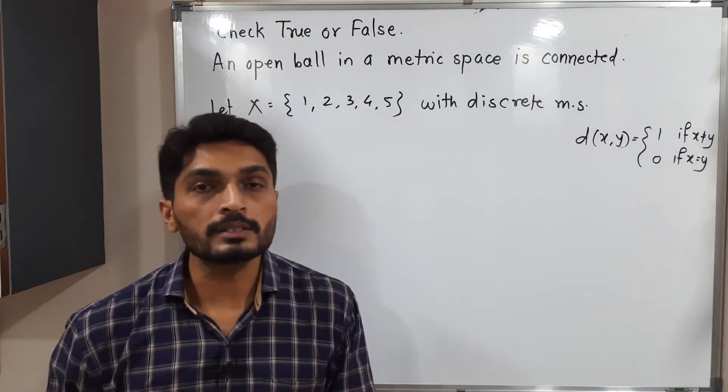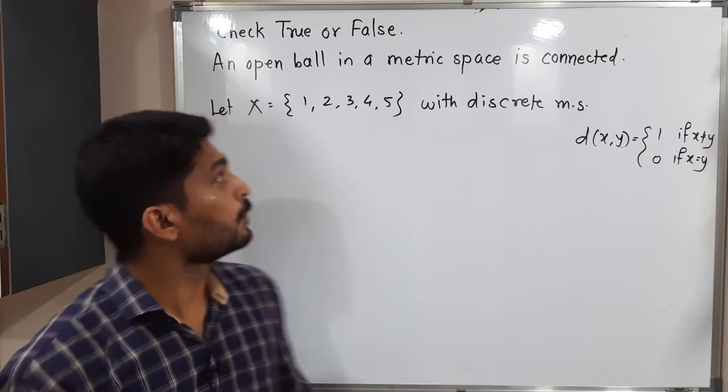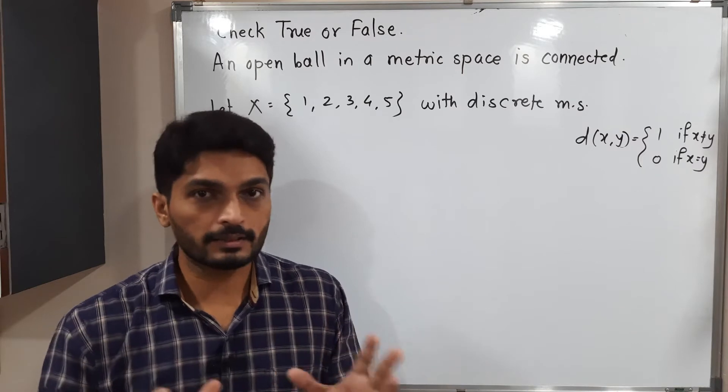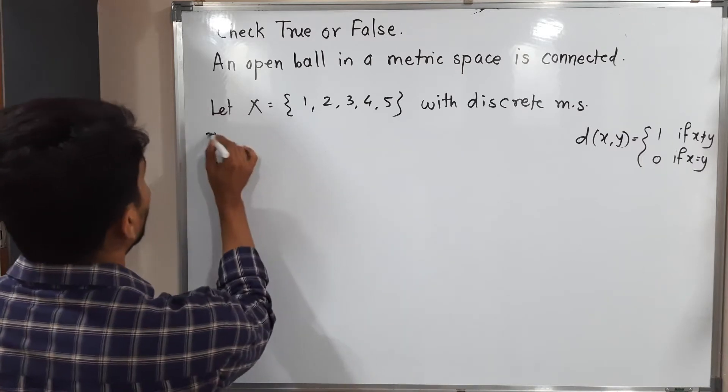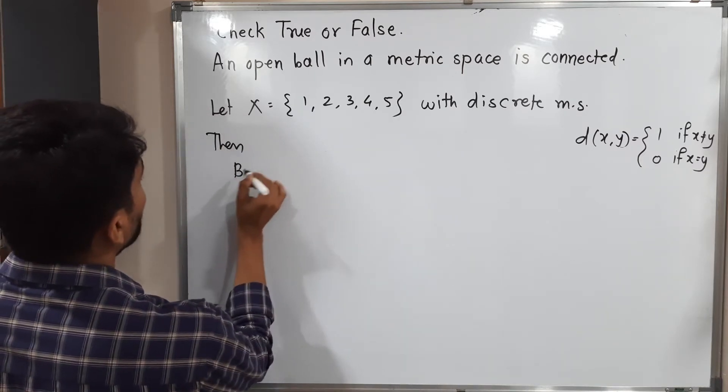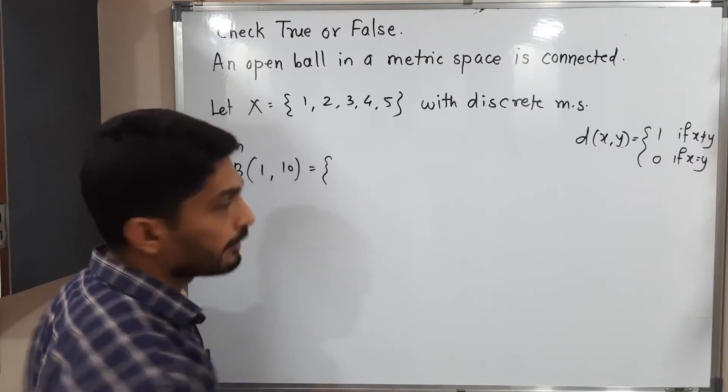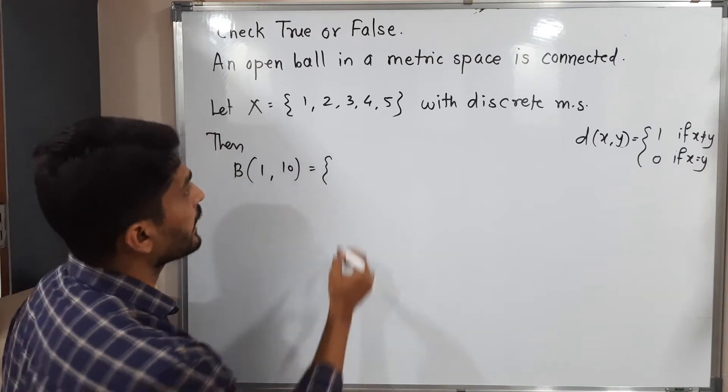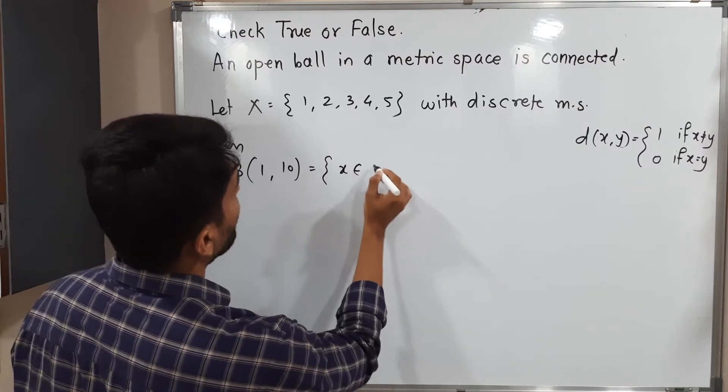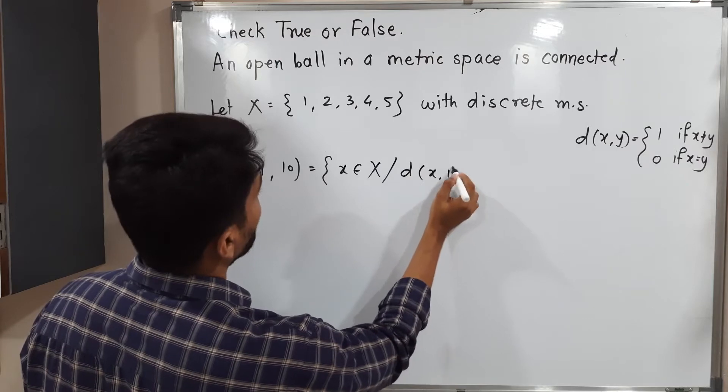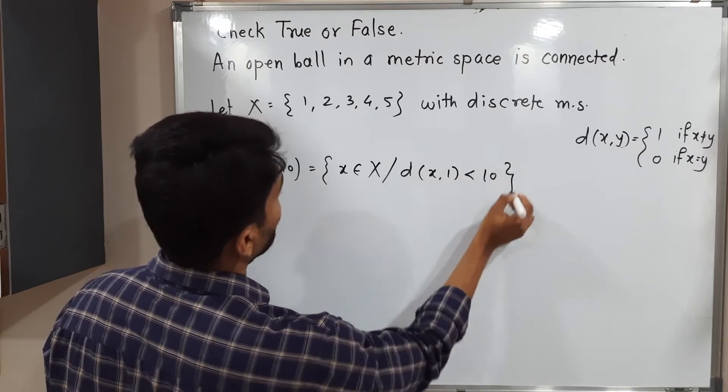So what I am going to do, I am going to consider an open ball with center 1 and radius 10. Let us discuss this open ball. Then open ball with center 1 and radius 10. So you know the definition of open ball. It is defined as x belongs to capital X such that distance between x and 1 should be less than 10.